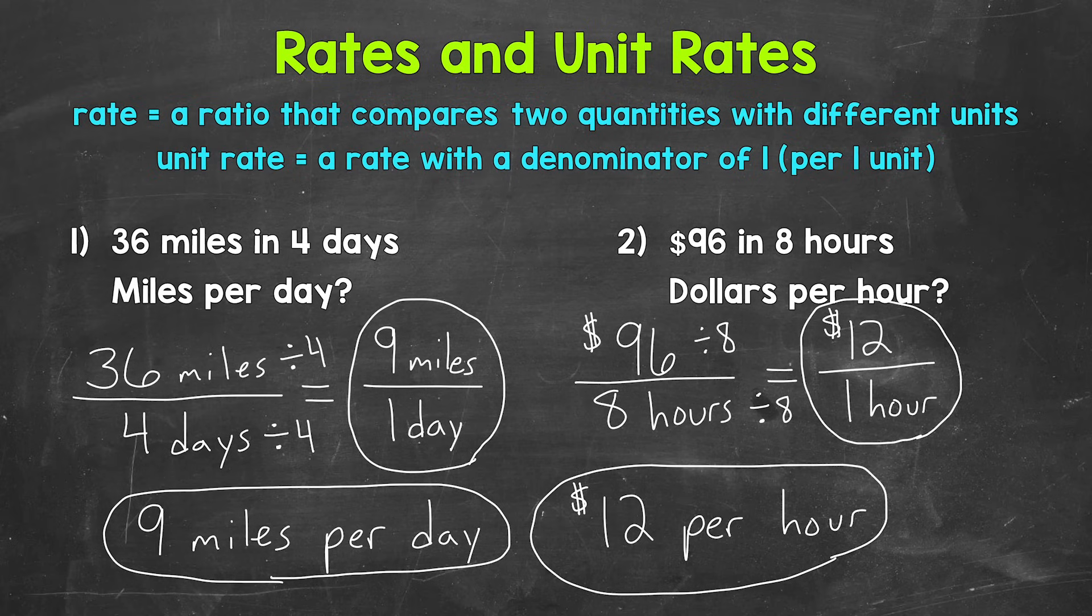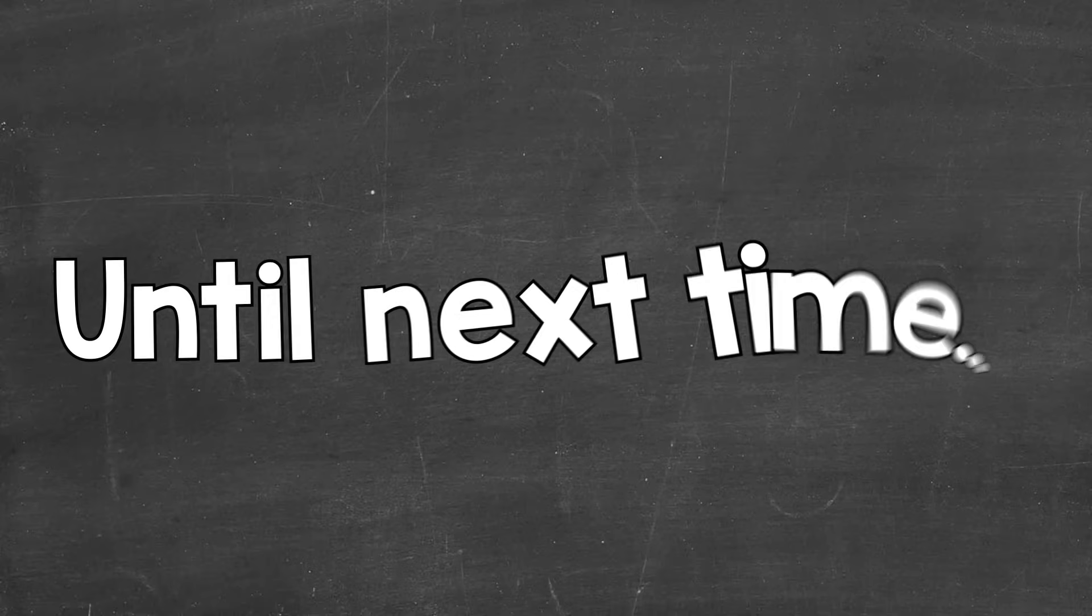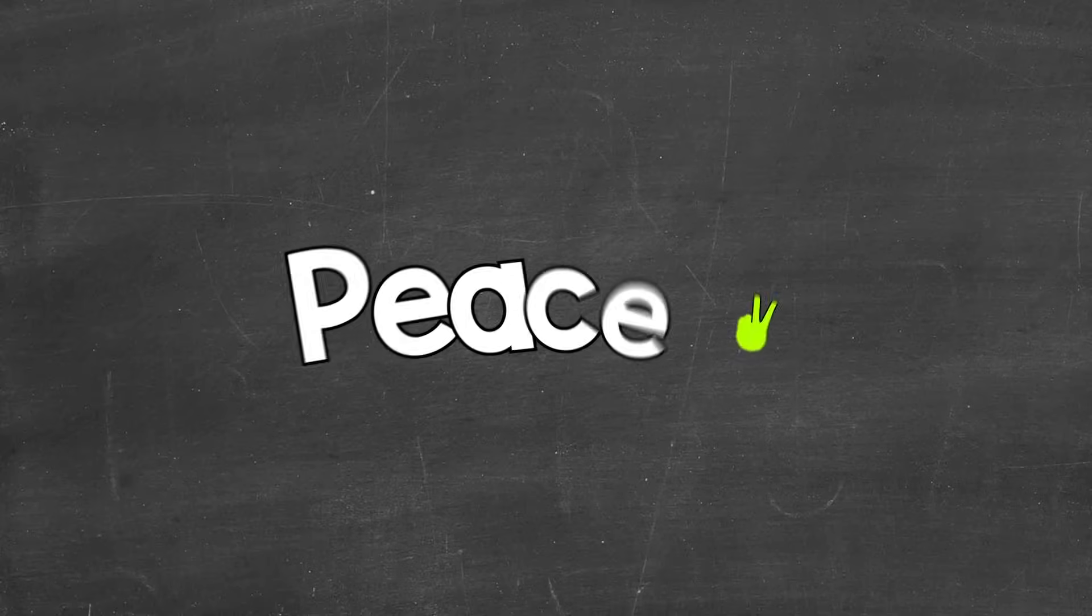So there you have it. There's how you write rates and unit rates. Rates are ratios that compare two quantities with different units. And then a unit rate is a specific type of rate. It's a rate with a denominator of 1. We show per 1 unit. I hope that helped. Thanks so much for watching. Until next time. Peace.